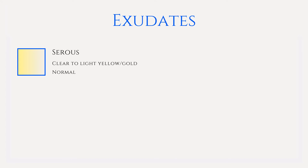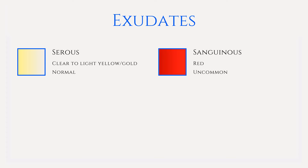Serous drainage is clear to light yellow or light gold in color and is a normal part of healing. Blisters contain this type of exudate.